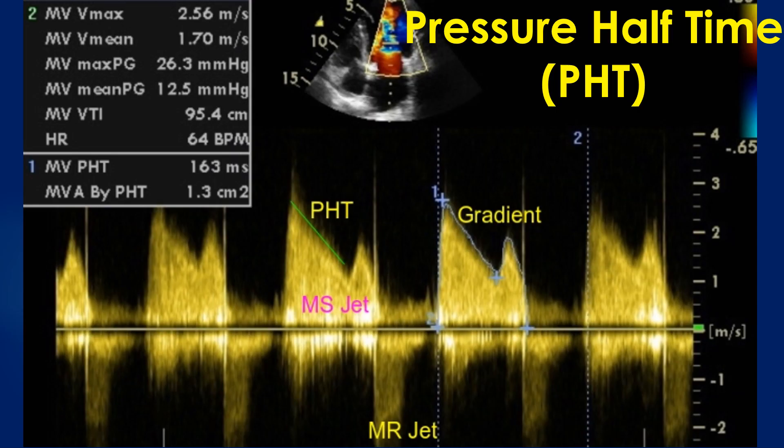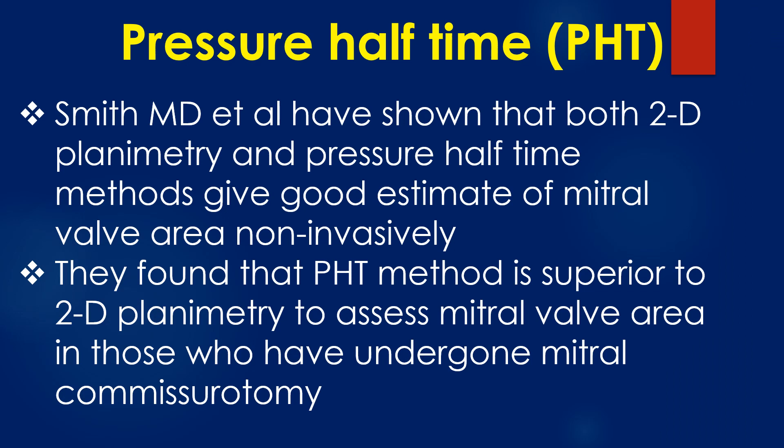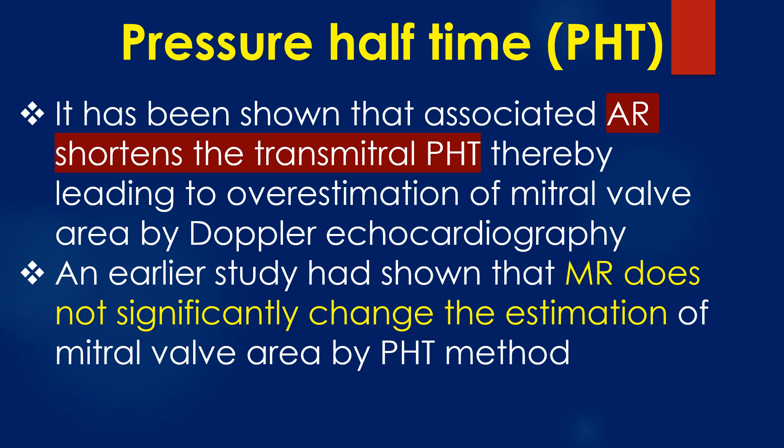In this image, the green cursor measures the pressure half-time of the mitral stenosis jet. In this case, the pressure half-time was 163 ms and the estimated mitral valve area was 1.3 cm². Studies have shown that both 2D planimetry and pressure half-time methods give a good non-invasive estimate of mitral valve area. The pressure half-time method is superior to 2D planimetry for assessing mitral valve area in those who have undergone mitral commissurotomy. Associated aortic regurgitation shortens the transmitral pressure half-time, thereby leading to overestimation of mitral valve area by Doppler echocardiography.